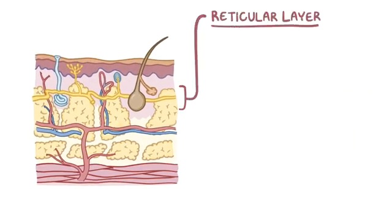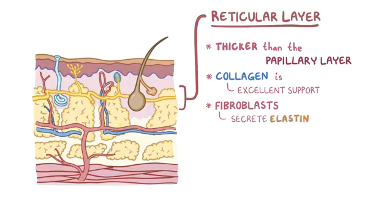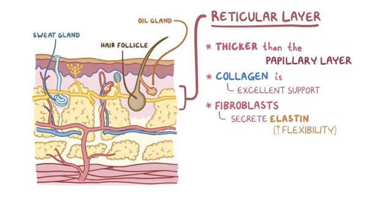The reticular layer of the dermis is even thicker than the papillary layer. The collagen in the reticular layer is packed very tightly together, making it excellent tissue support. In addition, fibroblasts in the reticular layer secrete elastin, which is a stretchy protein that gives skin its flexibility. The reticular layer also contains the skin's accessory structures like oil and sweat glands, hair follicles, lymphatic vessels, and nerves, and all of the blood vessels that serve these tissues.